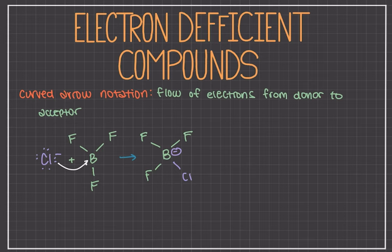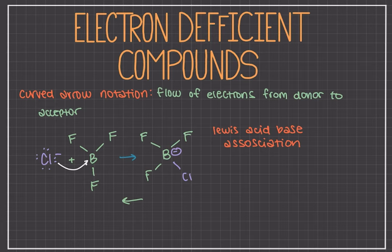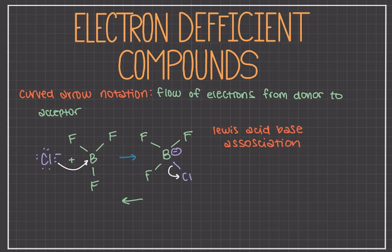This reaction is an example of a Lewis acid-base association reaction, because the reactants are combining to become a product. The reverse of this reaction is called a Lewis acid-base dissociation reaction, because the reactants — in this case the BF₃Cl⁻ — dissociate and become BF₃ and Cl⁻. The B–Cl bond breaks in this reaction and the electron pair is transferred to make the chlorine ion, so we end up with BF₃ and the chlorine ion.